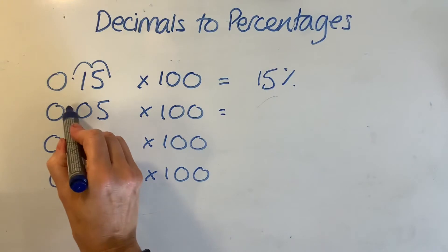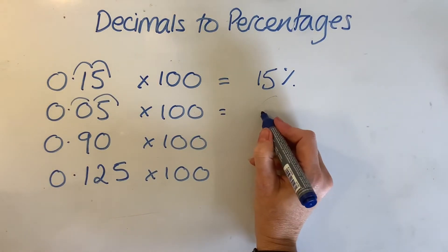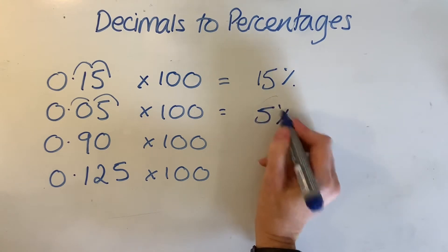Our second one, again, two places. So we end up with, well, it'd be 05%, but that's just 5%.